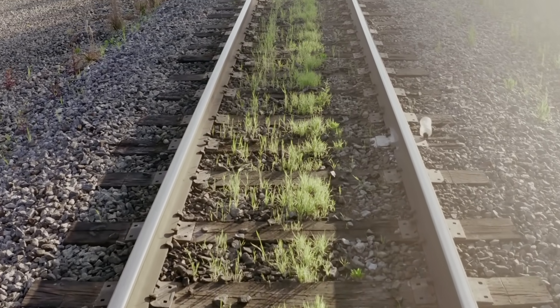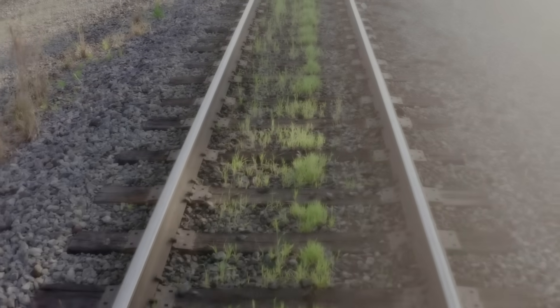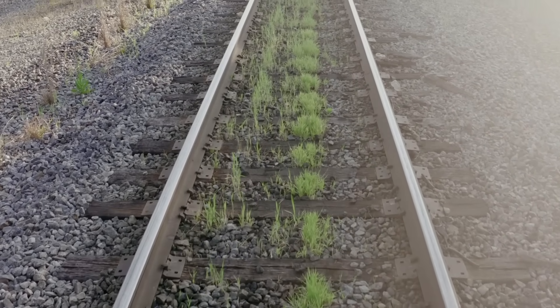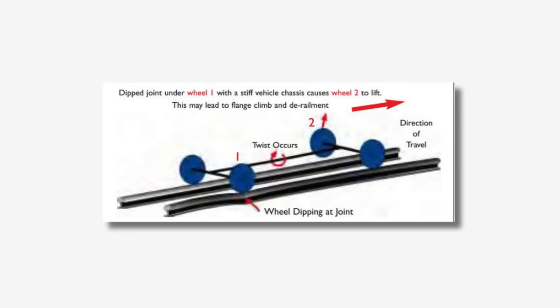Let's move on to a risk that is a little bit more complex and hazardous: the twist fault. Twist faults have a short rectification time, which should give you an idea of how seriously they are taken as a derailment risk. A twist fault is a sudden dip on one of the rails, as shown on this diagram on screen, which causes a sudden change in the cross level between the two rails. This sudden change in cross level causes a sudden unloading of a wheel, leading to it losing contact with the rail. Once wheel-rail contact is lost, the flange on the wheel can climb up the rail and derail the train.